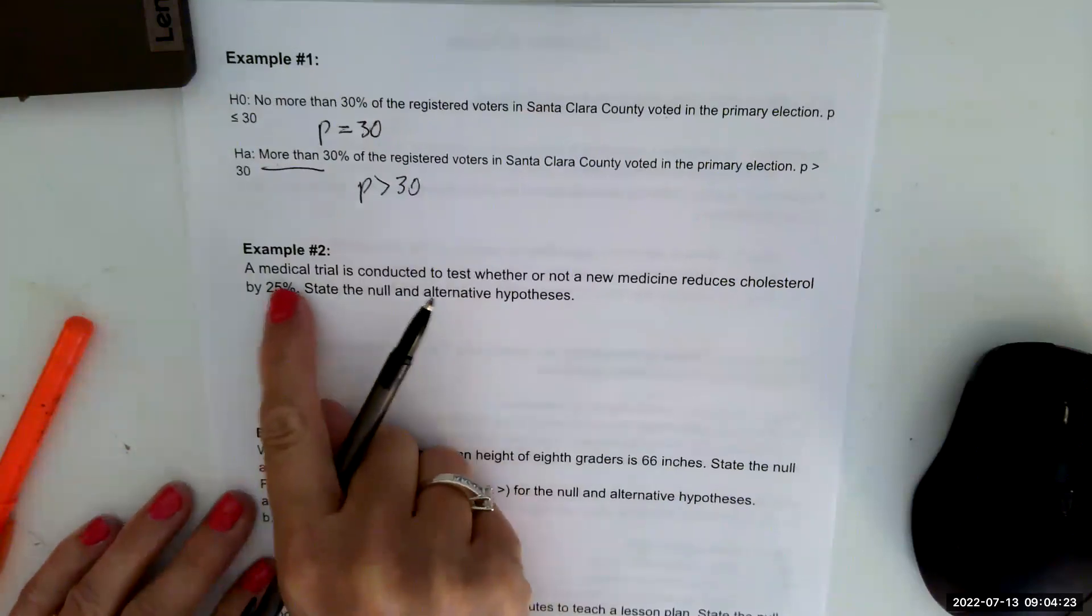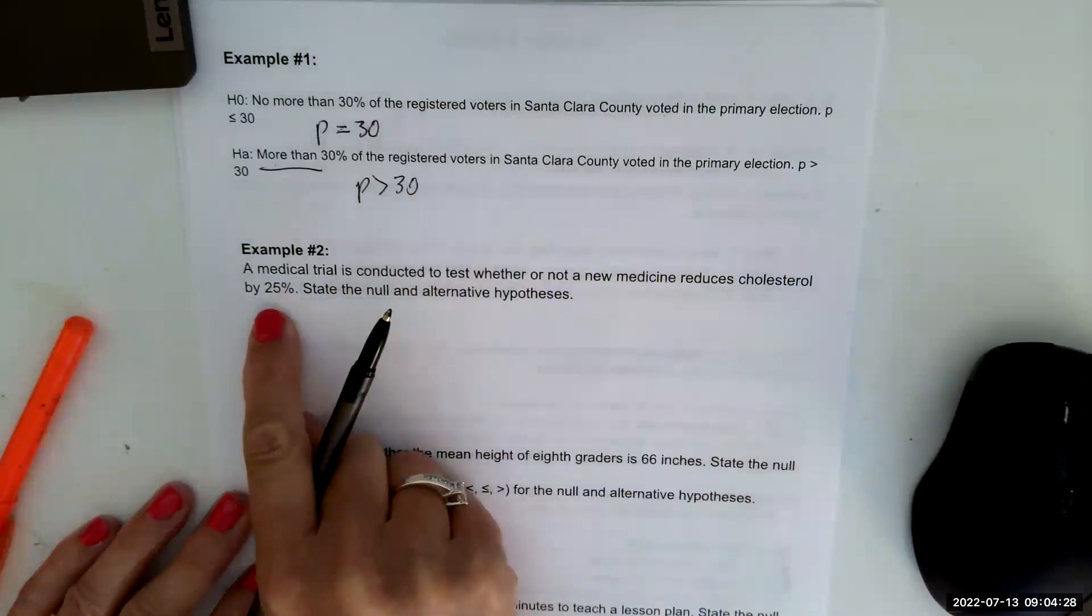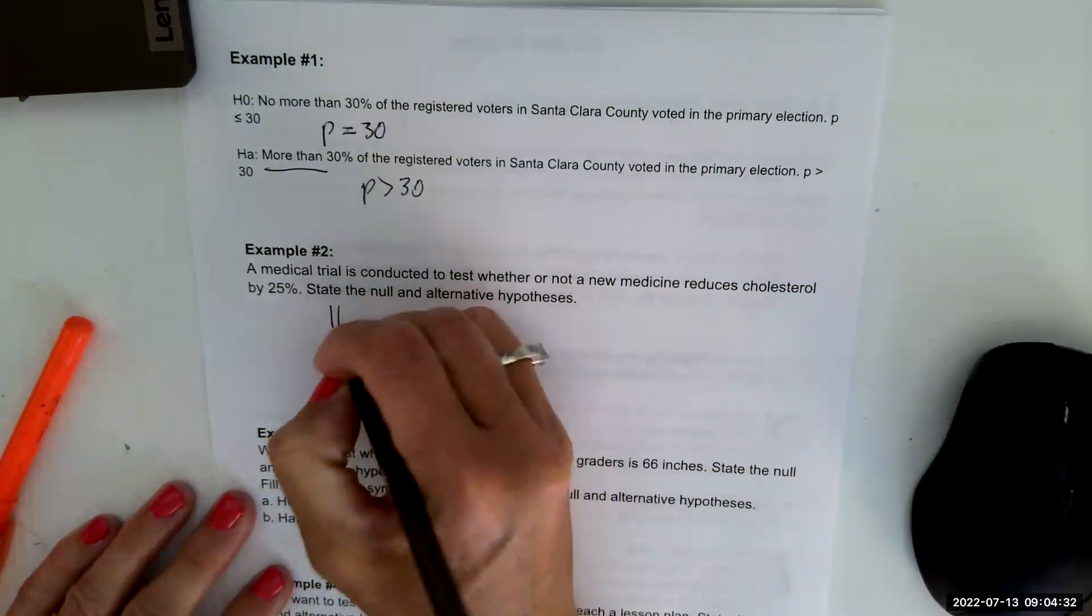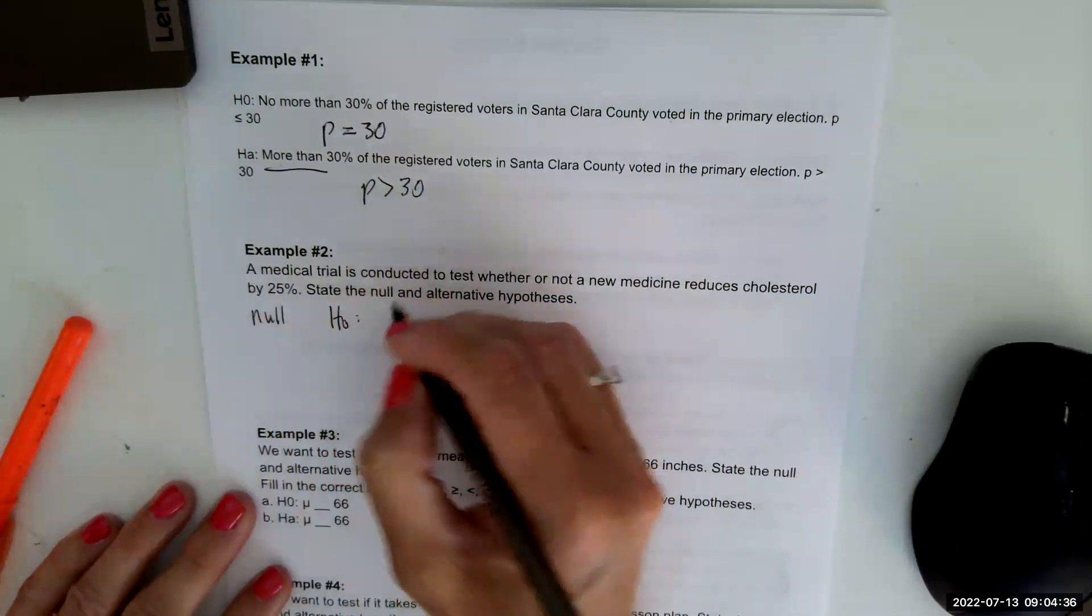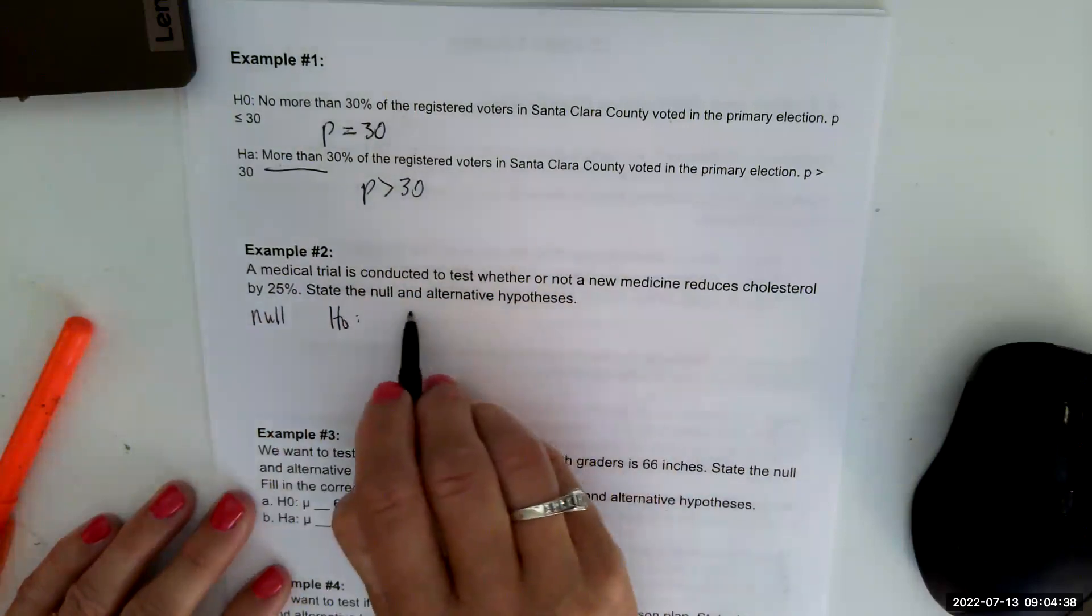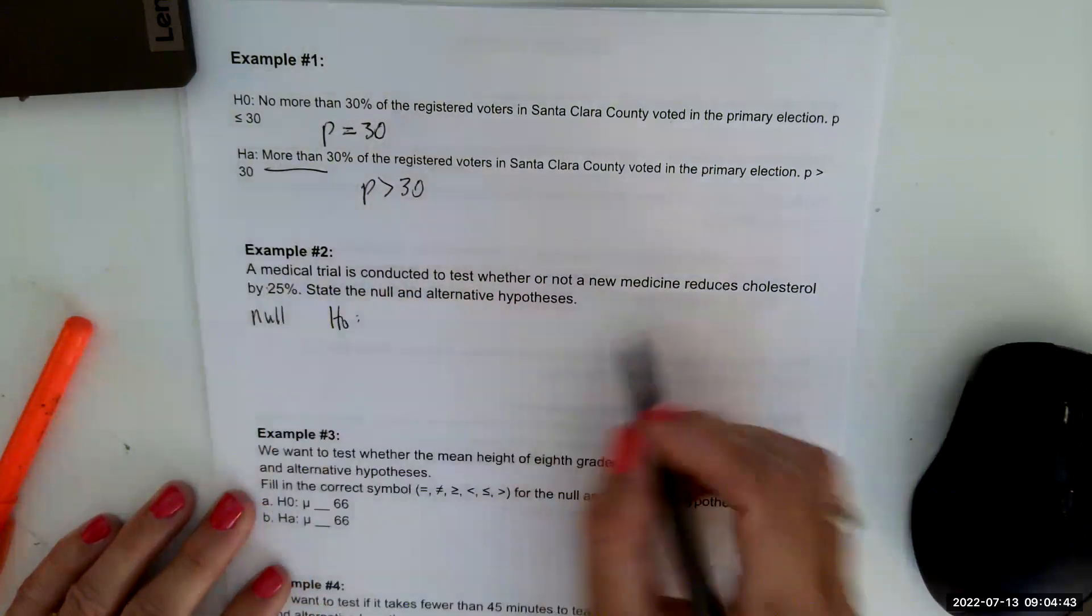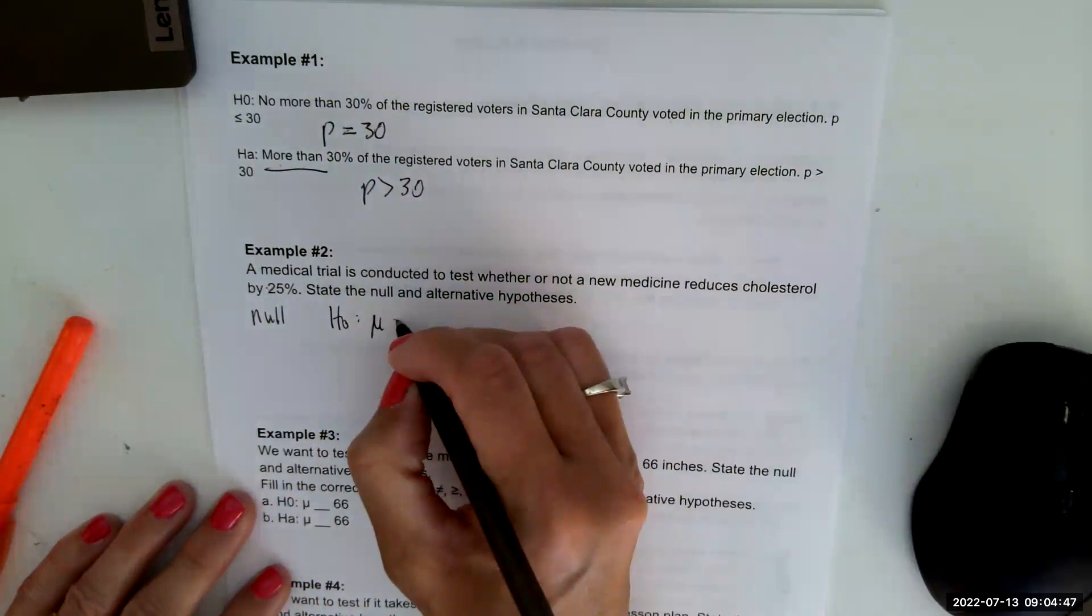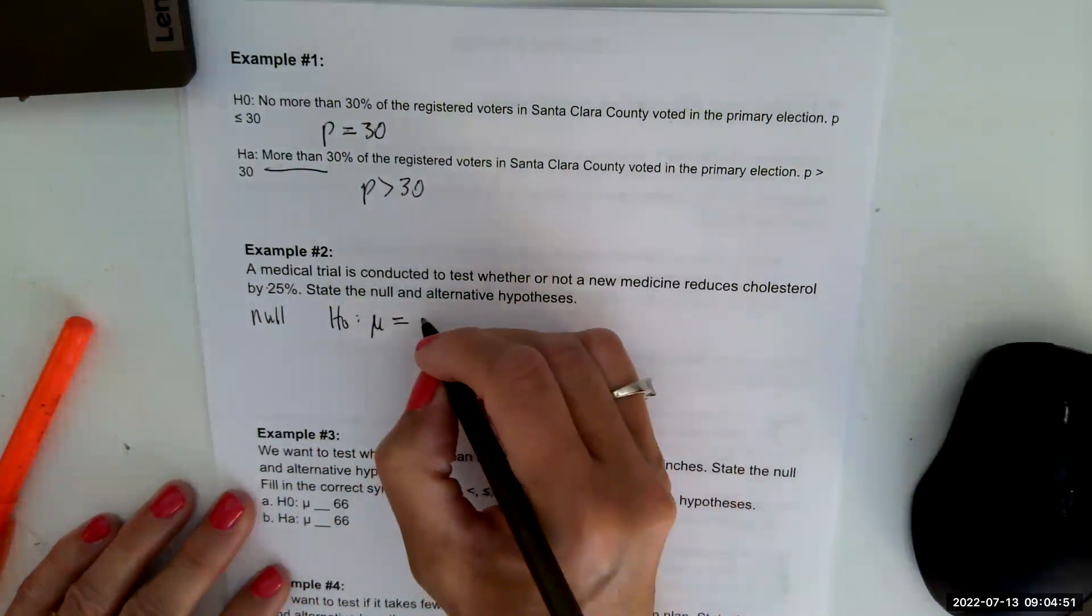Example two says, a medical trial is conducted to test whether or not a new medicine reduces cholesterol by 25%. State the null and alternative hypotheses. So the null is, and it's going to be the mean because it's a level of cholesterol. So the mean level is equal to zero.